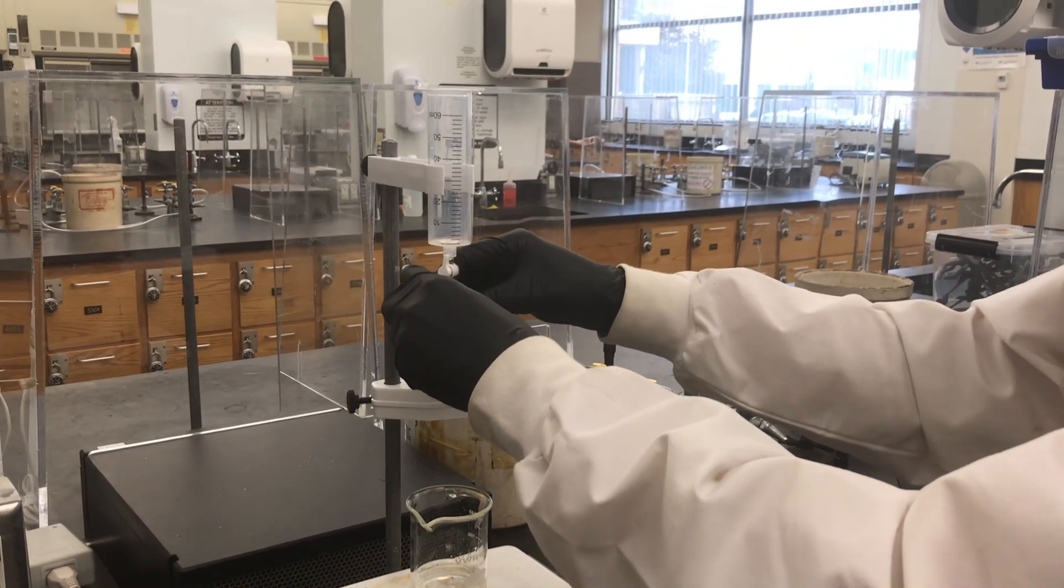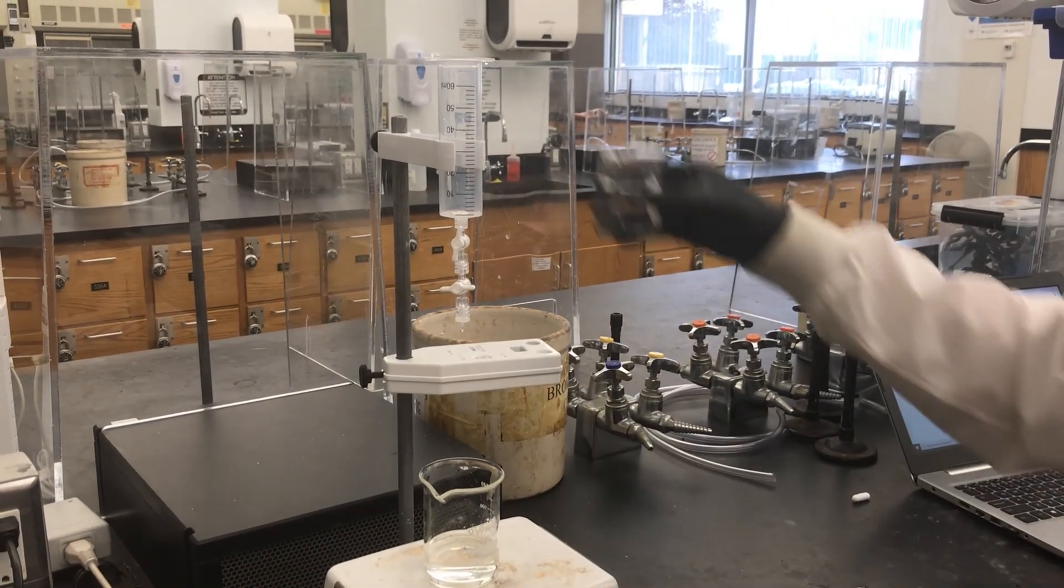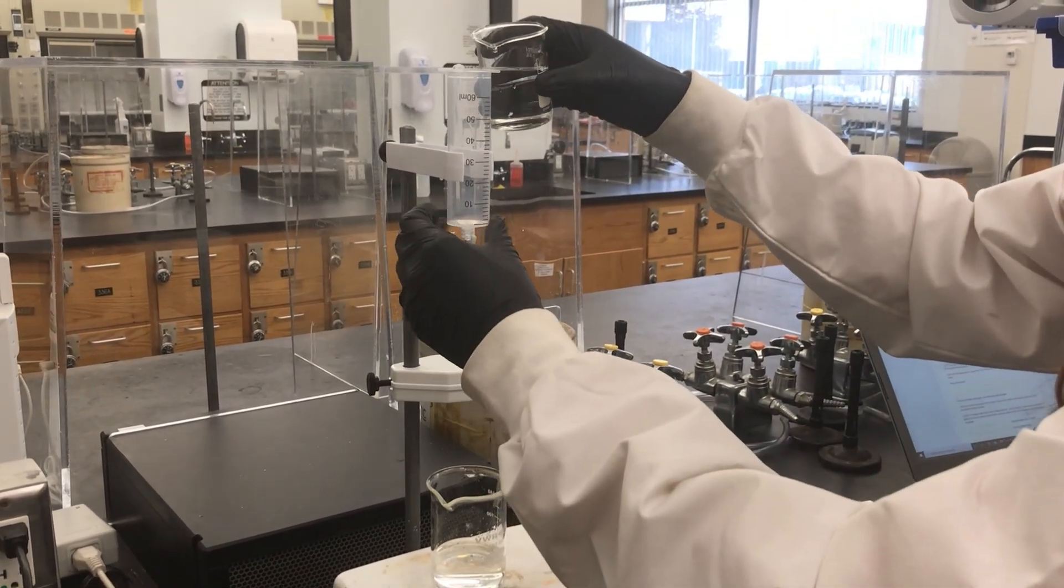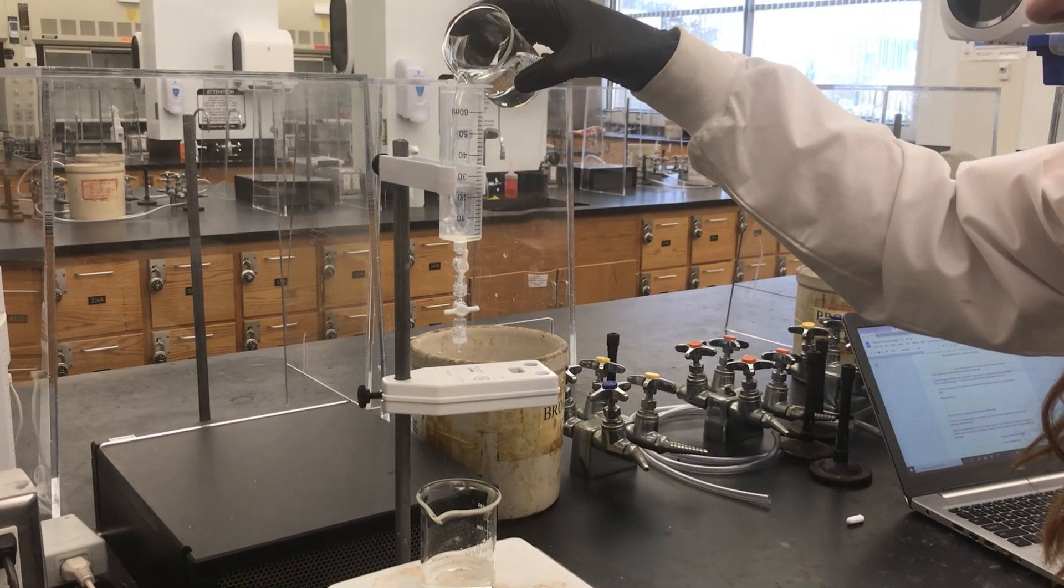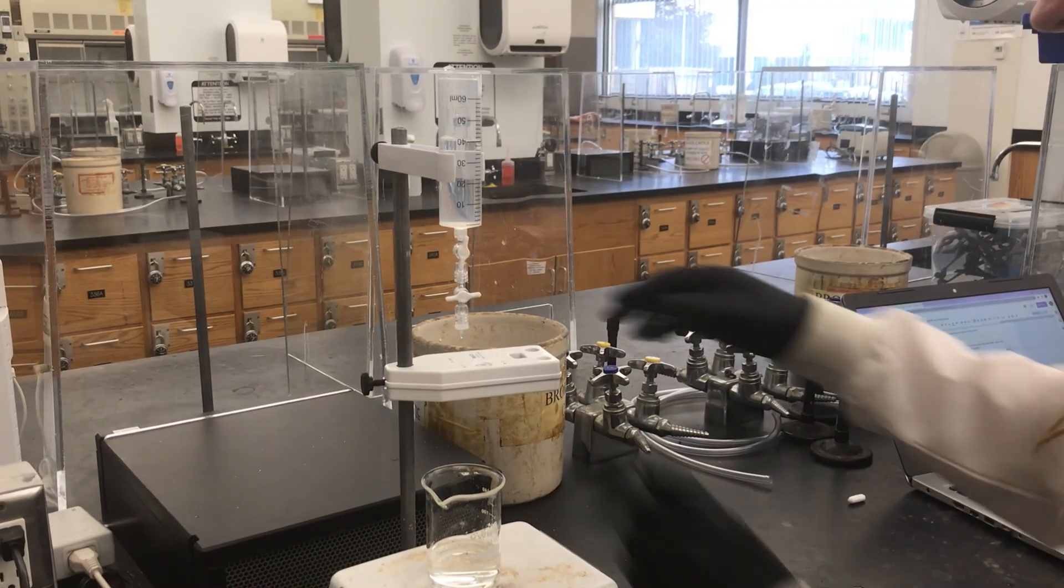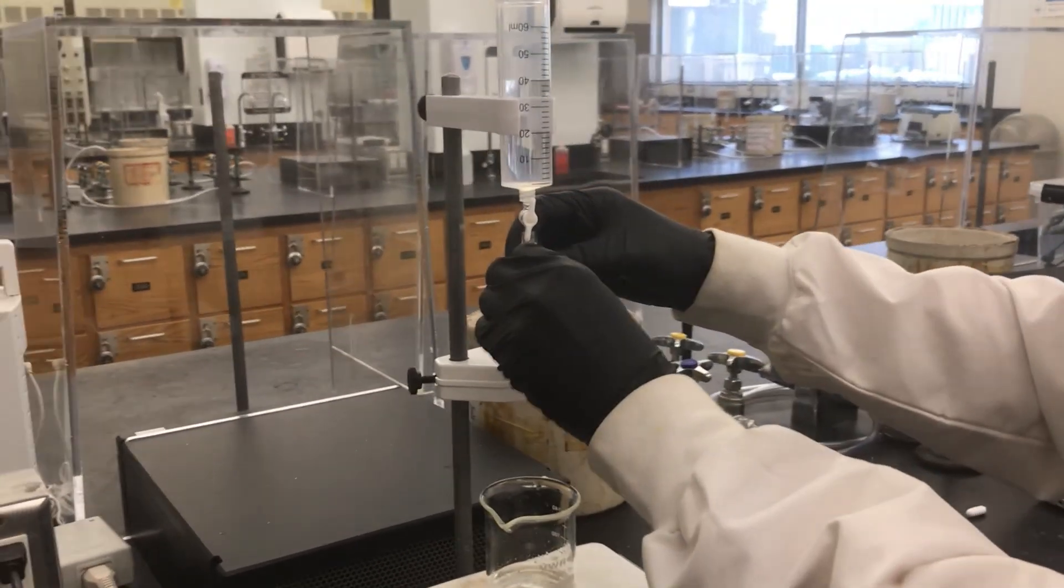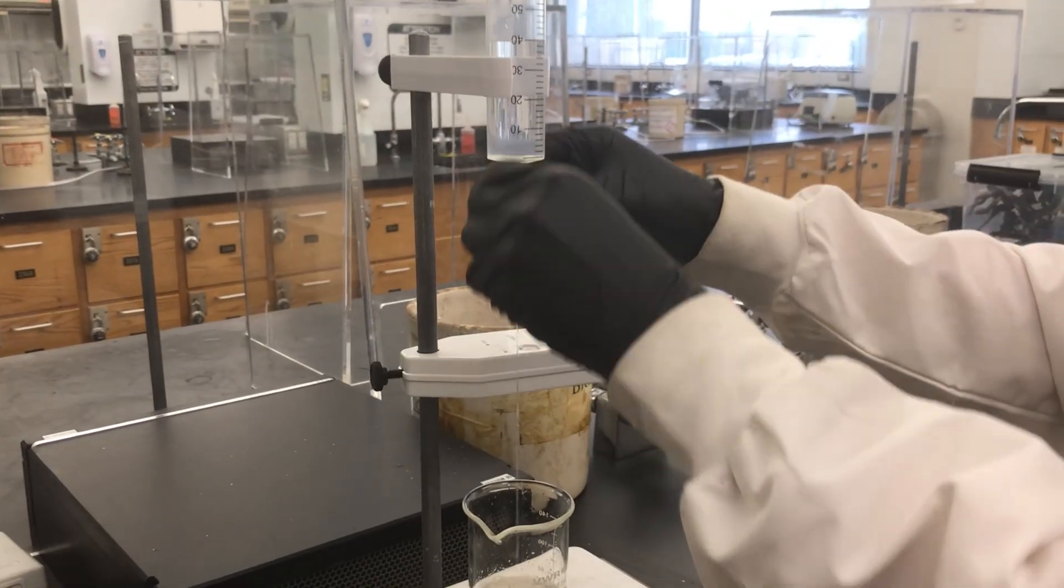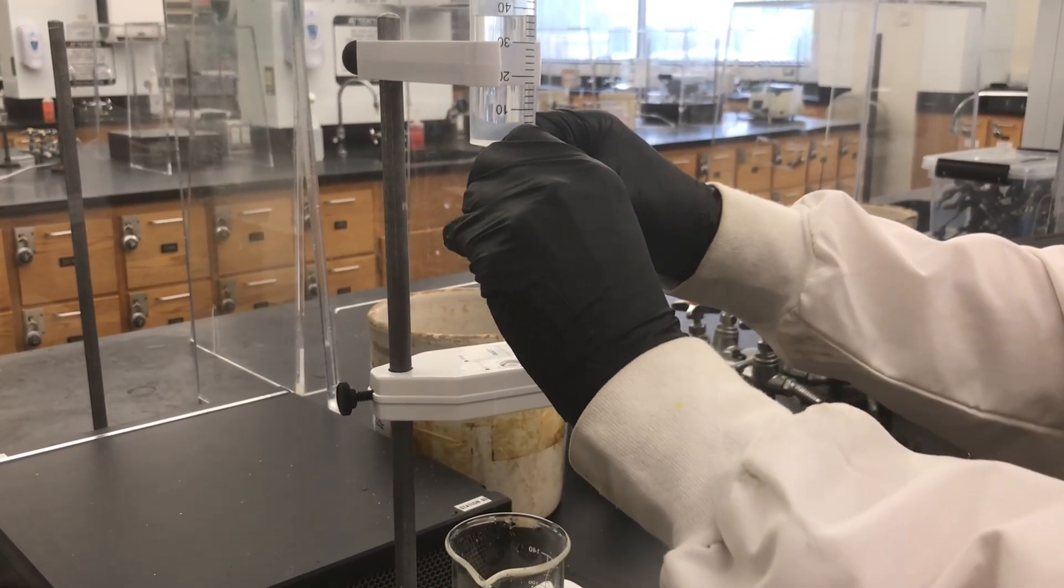You're now ready to add the NaOH that will be used in your titration runs. Make sure that both stopcocks are closed, then add about 40 milliliters of NaOH to the syringe. Open the bottom stopcock completely and then use the top stopcock to adjust the flow to about one drop per second. Once you get the right rate of one drop per second, you should only use the bottom stopcock to start and stop the flow.